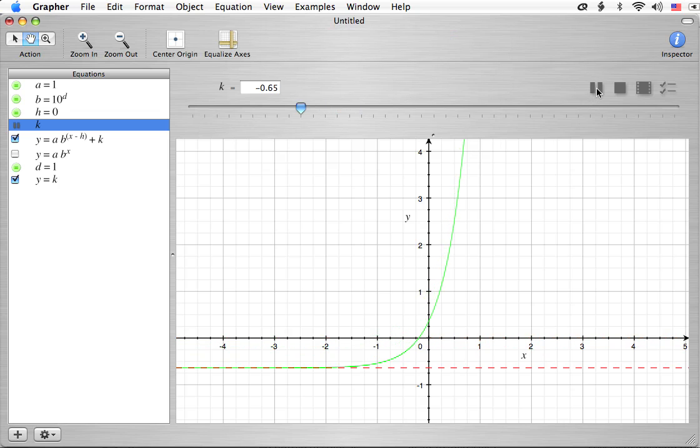If you guessed that this would move up and down, that is correct. You'll notice also the horizontal asymptote, the red dashed line, also moves with the graph. That's because it's dependent upon k.